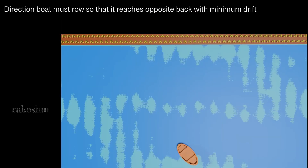The next part is: what direction must the person in the boat row so that it reaches the opposite bank with minimum drift? The boat starts from one bank and must reach a point directly opposite. If you have ever been in a boat on a river, you observe that the boatman does not point the boat directly to the opposite bank — he tilts it slightly and the boat still reaches the opposite bank.